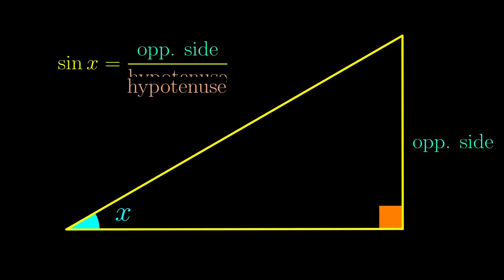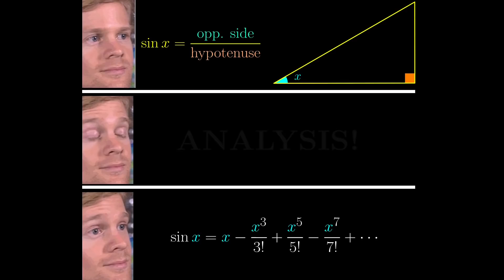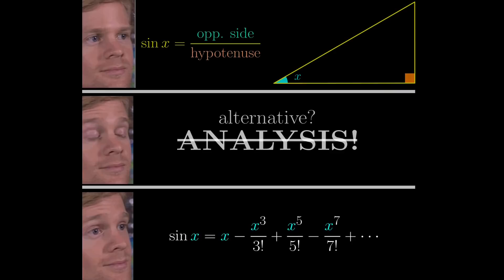We first learned that sine is the ratio of the opposite side to the hypotenuse of a right-angled triangle. But a lot of you might also know that sine can be written in the form of this series. They seem so unrelated to each other. How did we get from the geometric definition to this series? The standard answer is go study analysis, but is there an alternative? Yes, of course, otherwise I wouldn't be making this video.